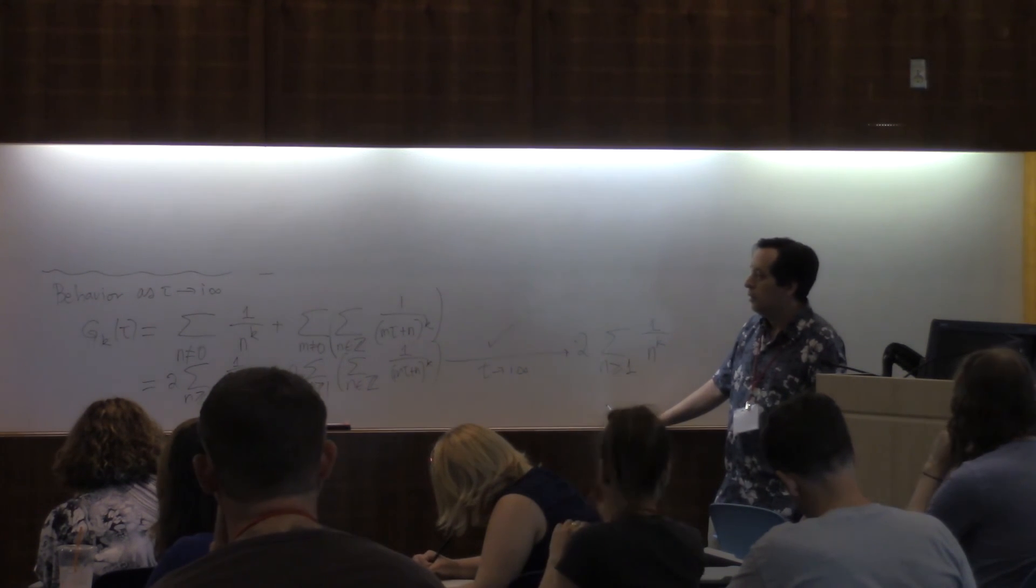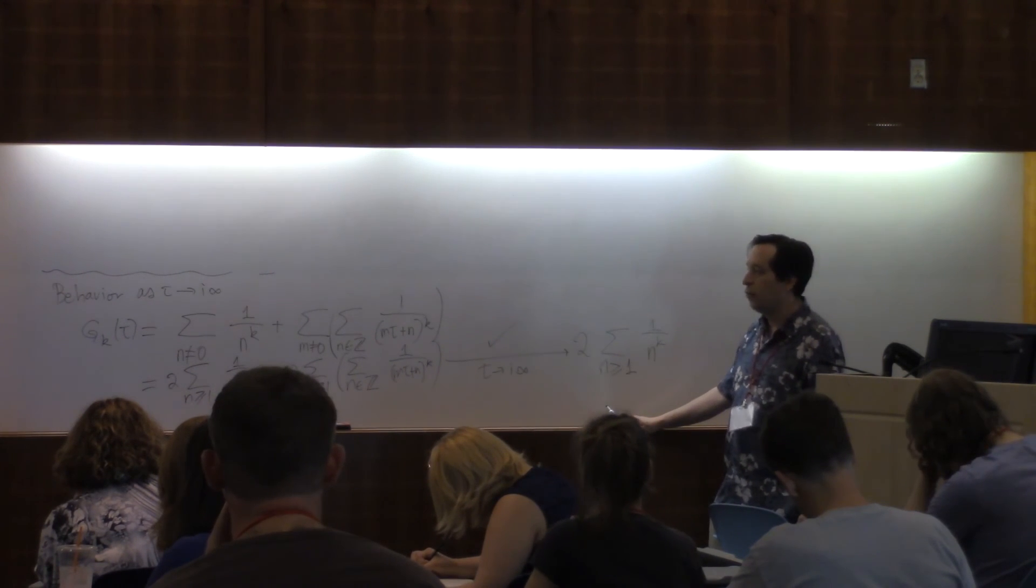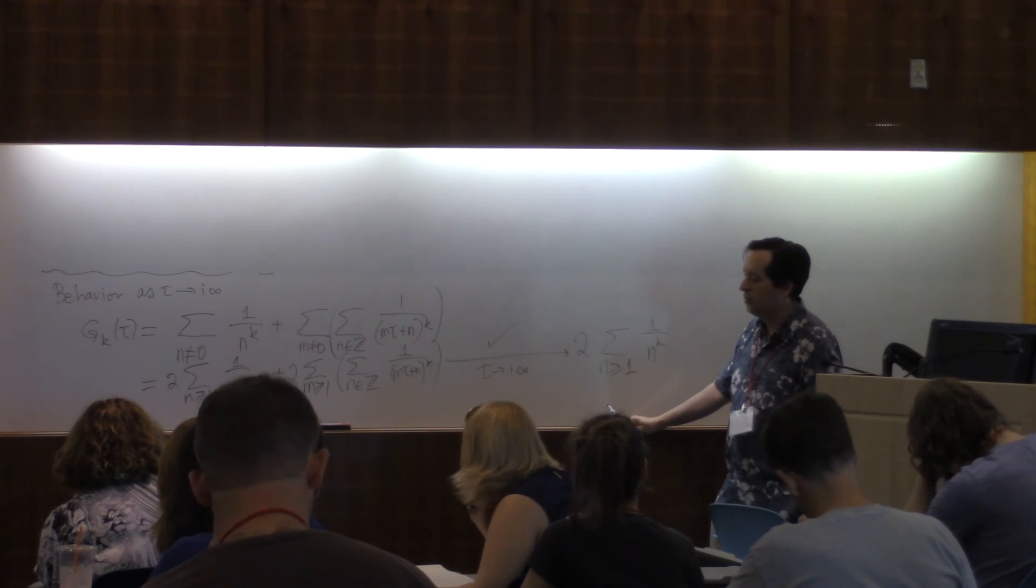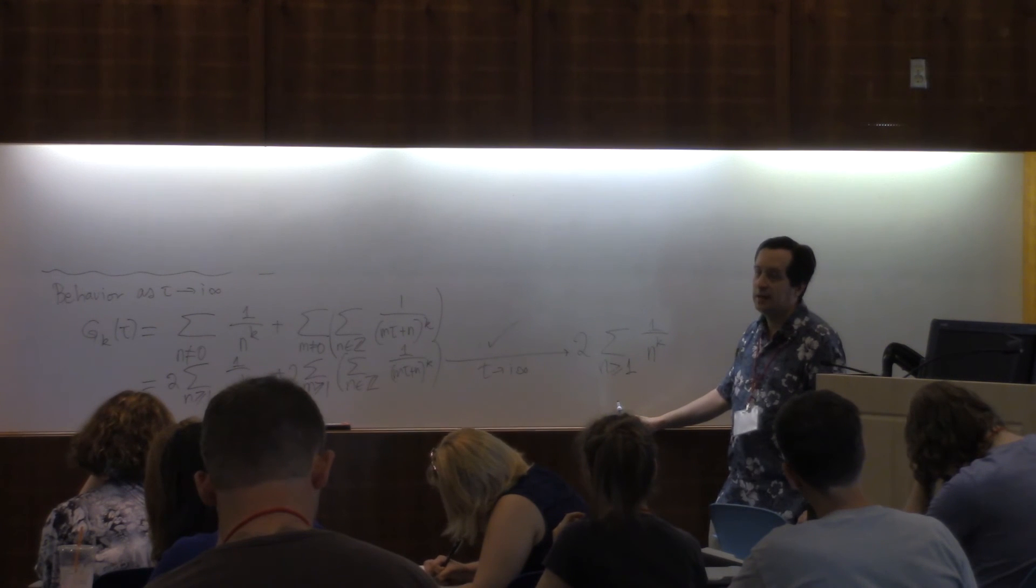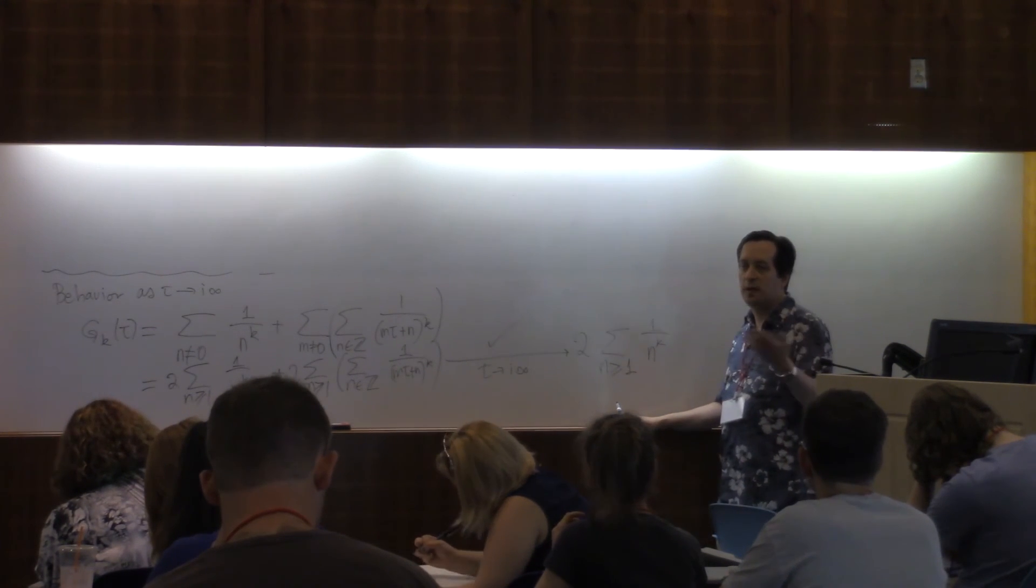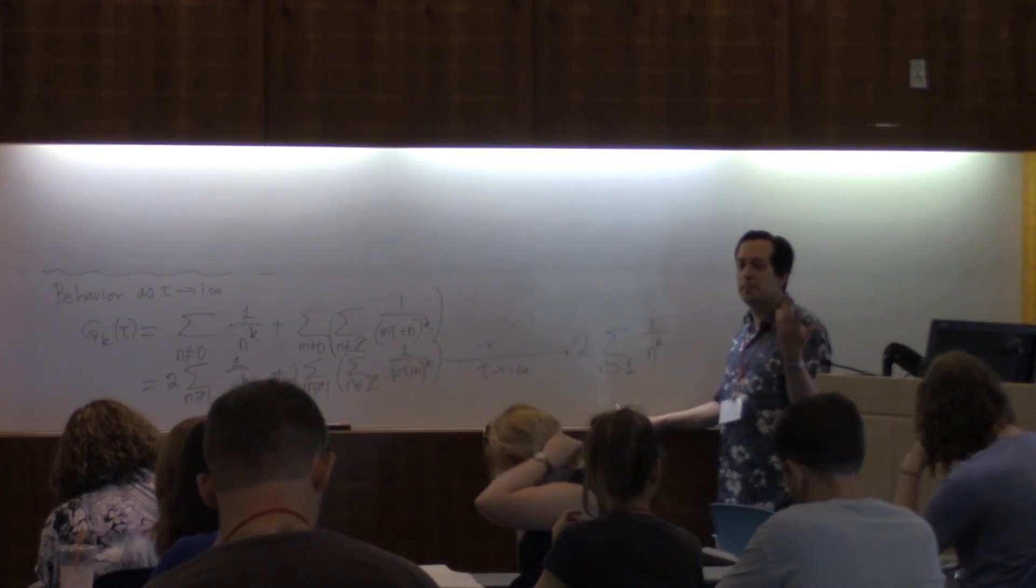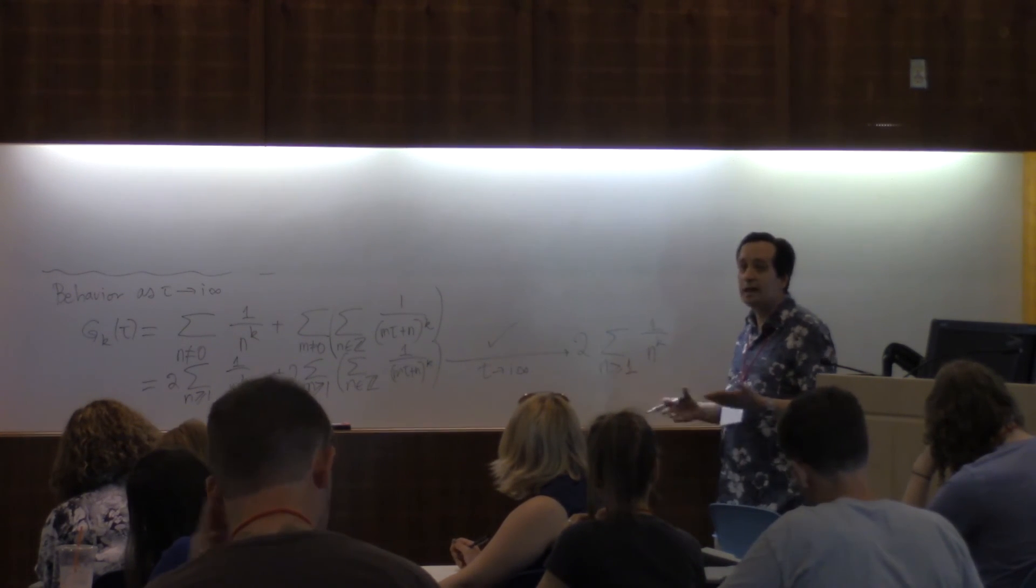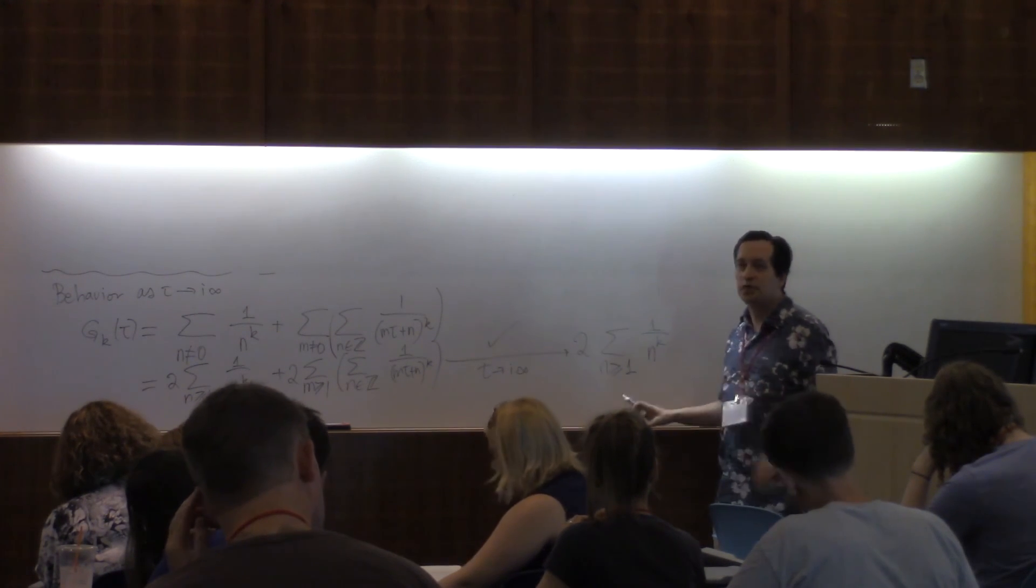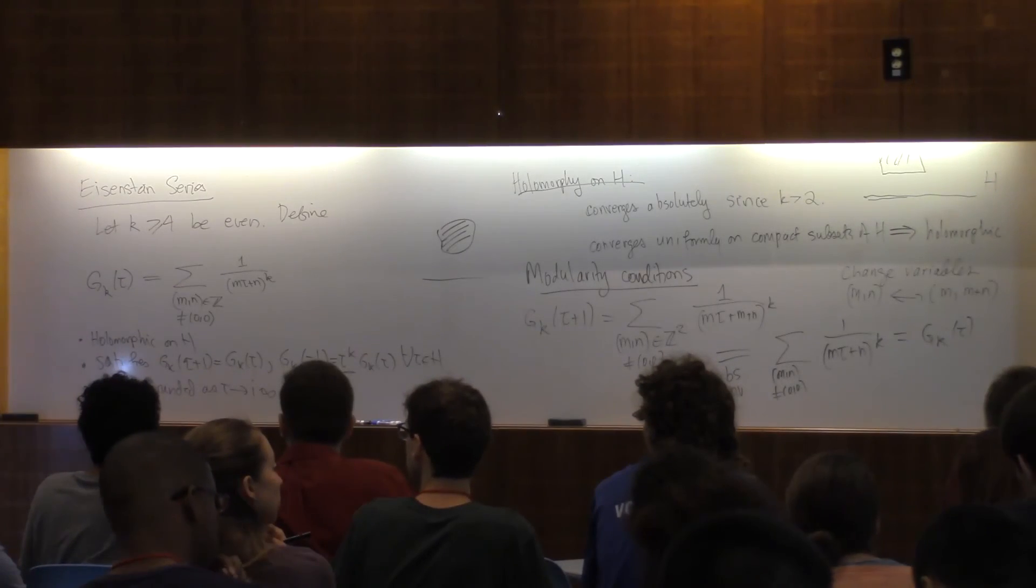So these are the basic examples for each weight 4, 6, 8, 10, 12, and so on. We have one example of a modular form of that weight. Not by a long shot is this the only one up to scale. But you can have modular forms of the same weight that are not scalar multiples of each other. But here we've only constructed a single example in each weight.